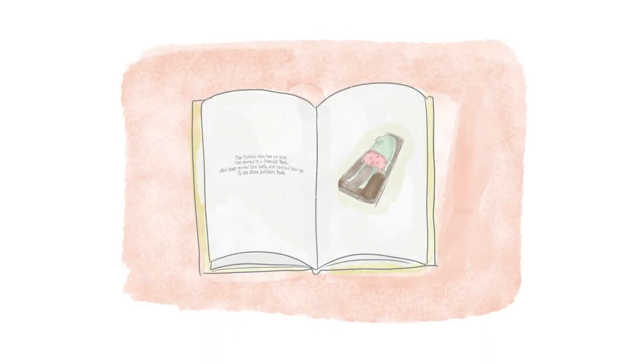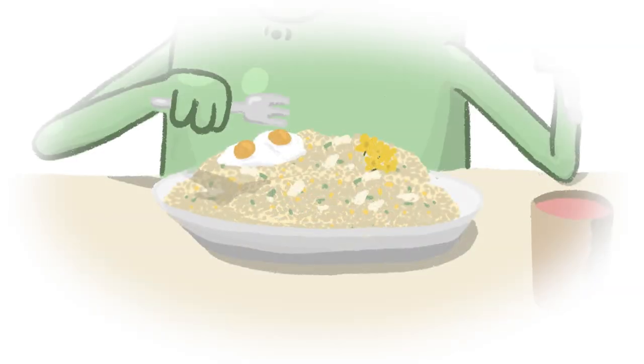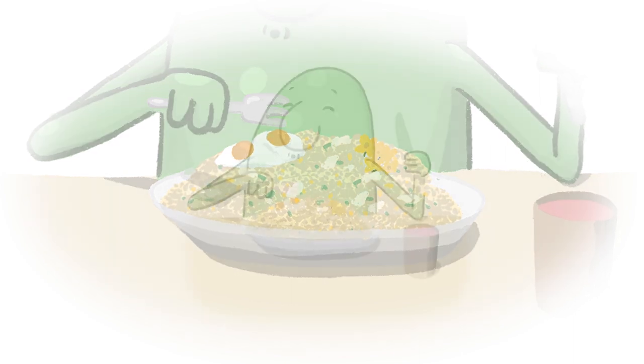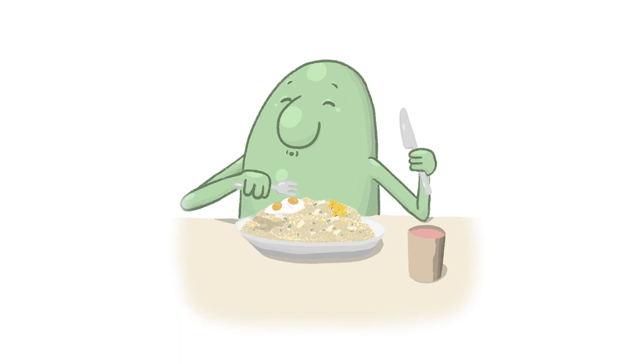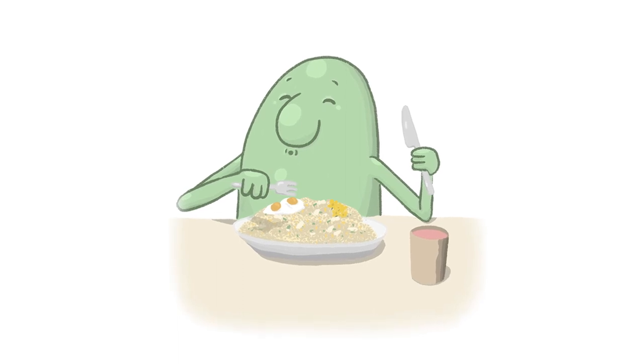The Pobble who has no toes was placed in a friendly bark, and they rode him back and carried him up to his Aunt Jibisca's park. And she made him a feast at his earnest wish of eggs and buttercups fried with fish. And she said, it's a fact the whole world knows that Pobbles are happier without their toes.